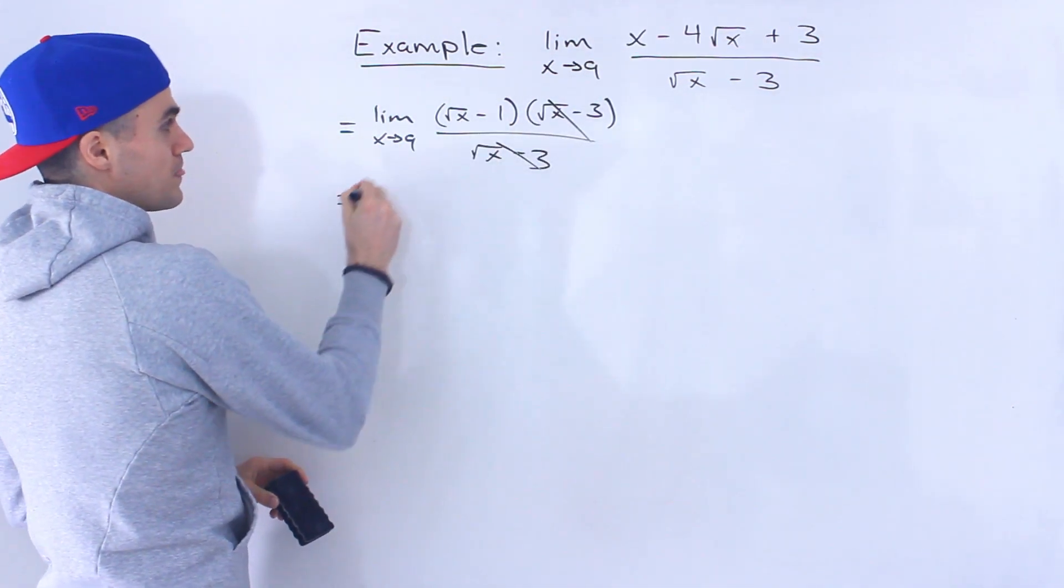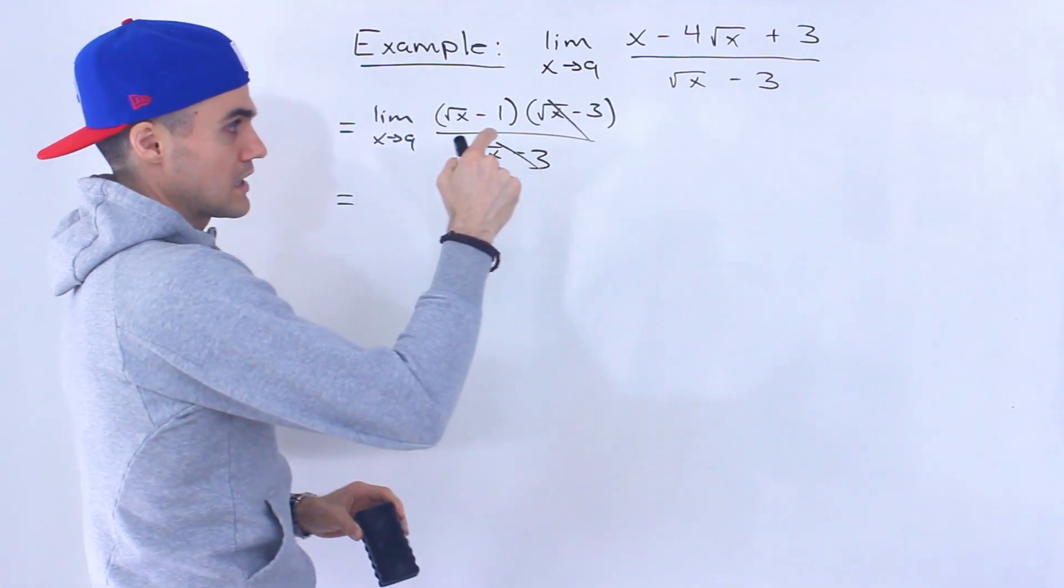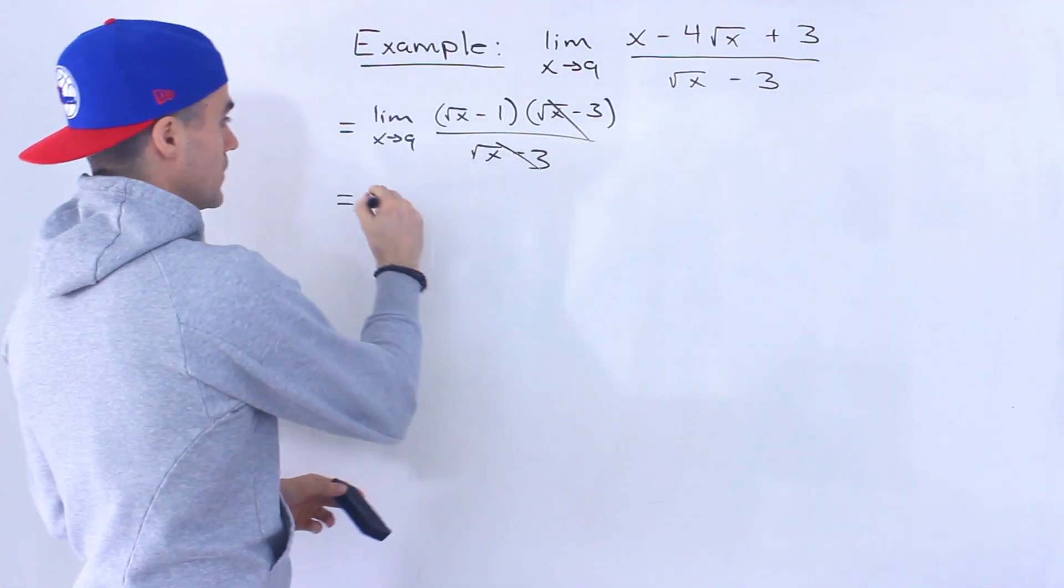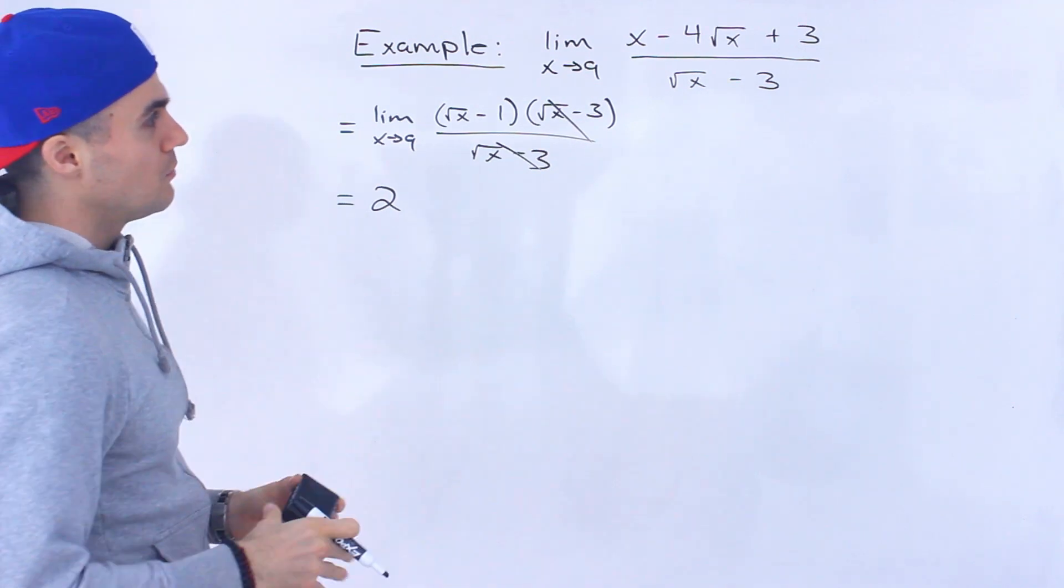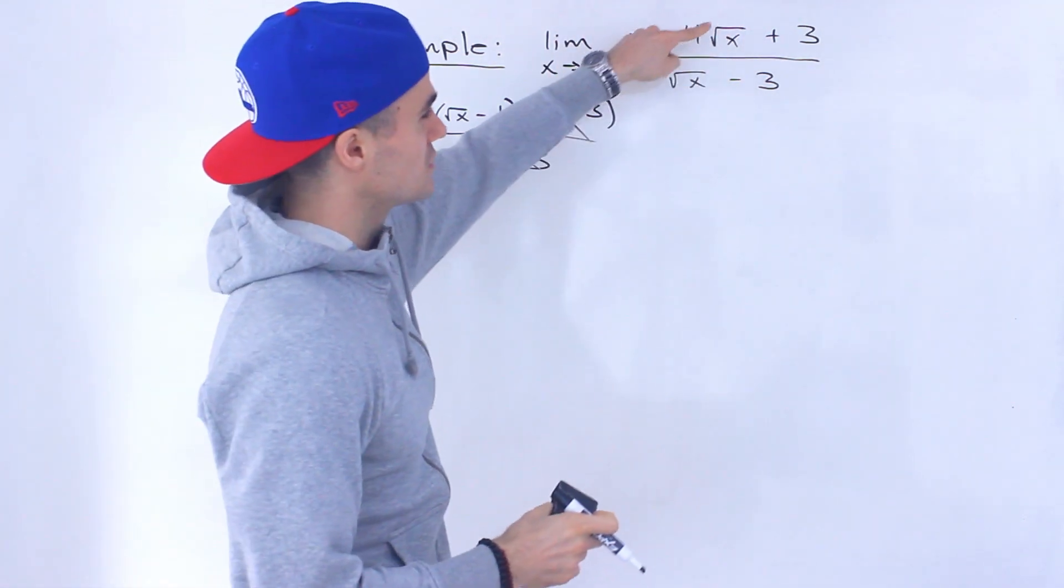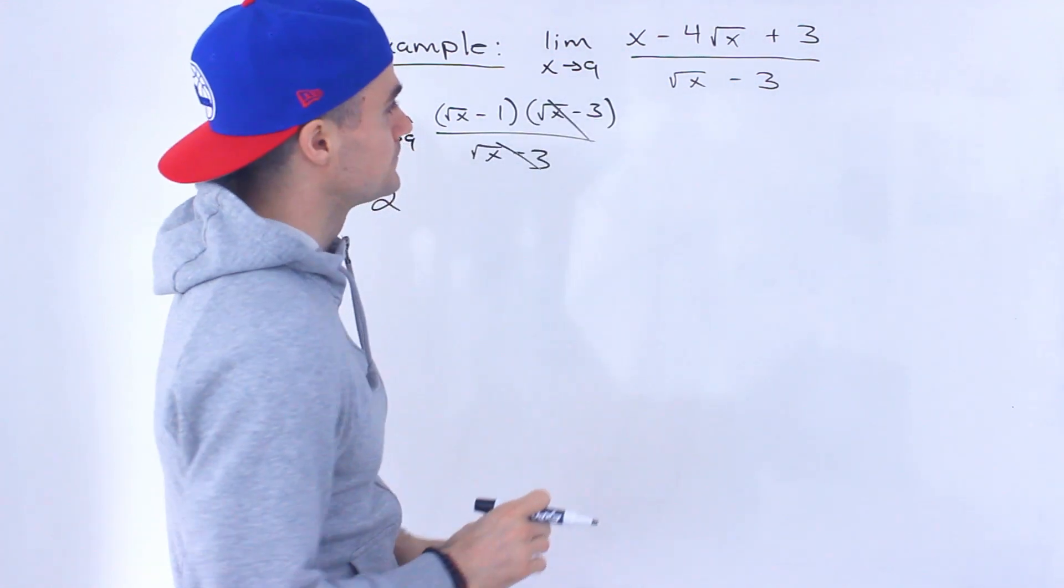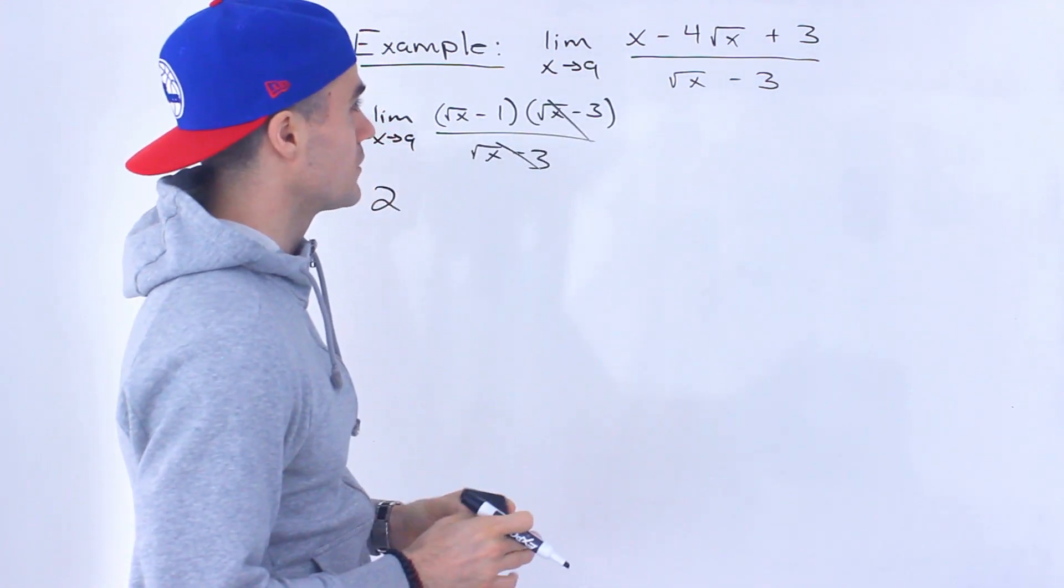Then you could plug in 9 for root x, which would be square root of 9 is 3 minus 1. That would give you 2. So that's one way to go about it. You could factor this. But because you're dealing with these root x's, not really a quadratic, it's a little tougher to deal with.